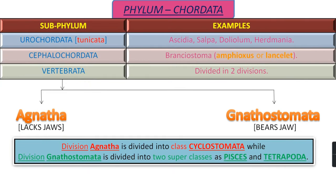Now we are starting with Phylum Chordata, which is divided into three sub-phylums: Urochordata, Cephalochordata, and Vertebrata. Urochordata, commonly known as Tunicata, has examples Ascidia, Salpa, Doliolum, and Herdmania. Cephalochordata's example is Branchiostoma, commonly known as Amphioxus or Lancelet.